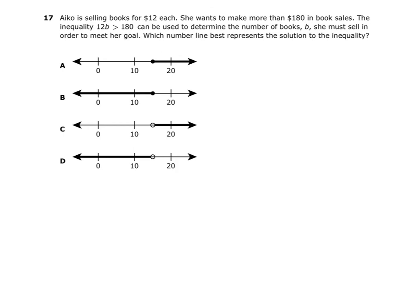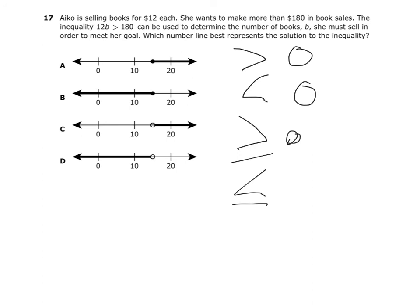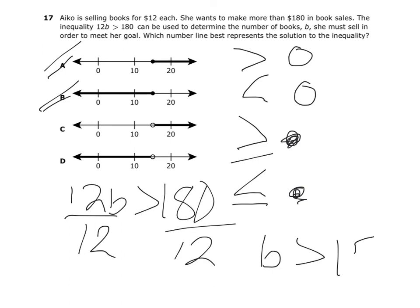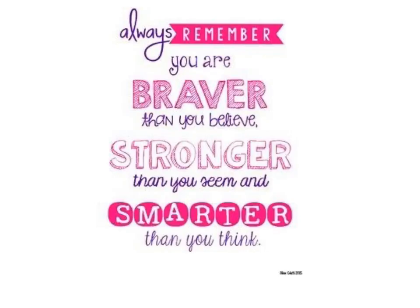One last quick reminder: inequalities means 'not equal to.' You have greater than, less than, greater than or equal to, and less than or equal to. The first two use open circles because they don't equal that number; the last two use closed circles because they do equal that number. That can help you eliminate two answers right away. For this problem — solve 12B is greater than 180 — I can eliminate A and B because those are 'equal to' problems. Then I divide by 12: B is greater than 15. The only answer showing B is greater than 15 is C.